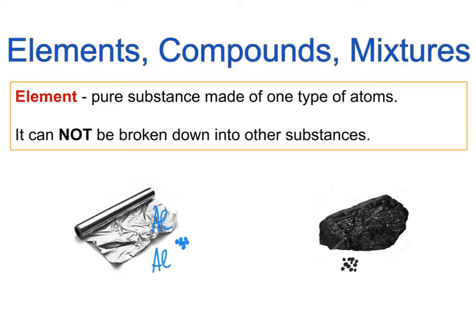The same can be said about diamond — once again, atoms of carbon in a specific structure, but still all atoms are the same. So elements are pure substances made of one type of atoms, and elements cannot be broken down into other substances. They are the end of the line — you cannot decompose them into something smaller in terms of chemical decomposition.